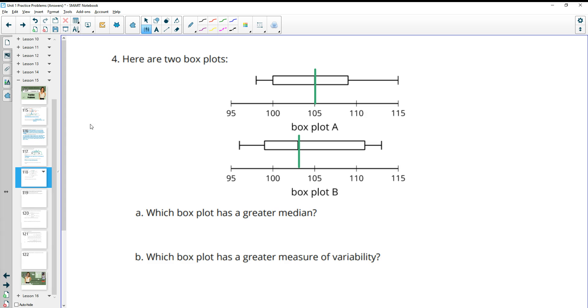And then which box plot has greater variability? So which one is more spread out? Which one is wider? And if you look at this, here's this interquartile range. And if I just grab this and move it down here, we can see that box plot B, the data is wider or that interquartile range is wider than it is in A. So that means that box plot B has greater variability.